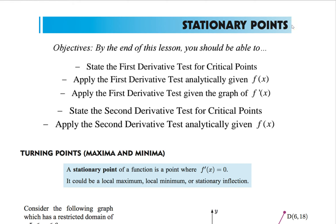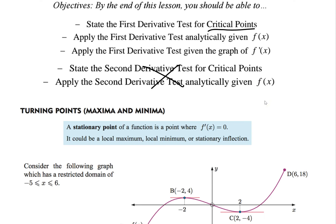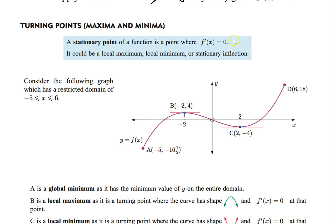Stationary points. Last lesson we talked about increase and decrease — when a function increases and when it decreases. The first step was finding critical points. In this lesson we're going to talk about critical points — what they are and their importance. We'll do this based on mathematics and the graph of f'(x). Critical points occur where the derivative equals 0 or is undefined, but a stationary point is only when the derivative equals 0.